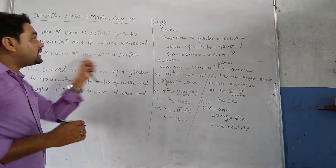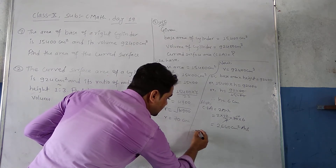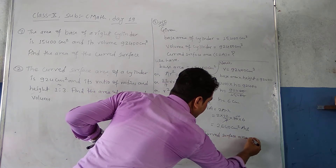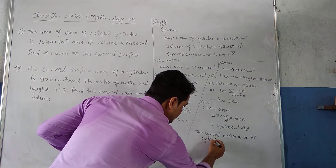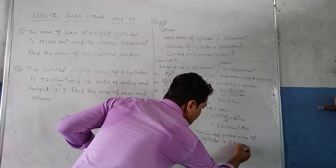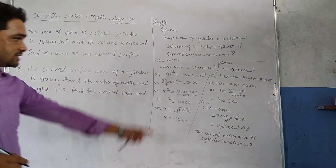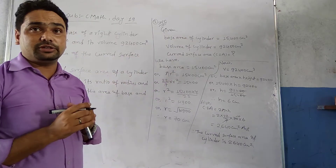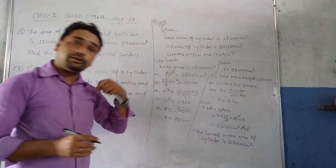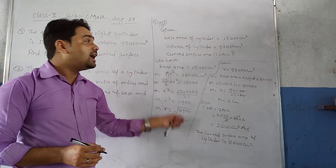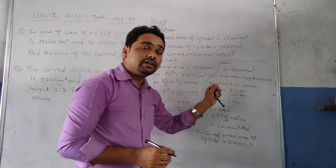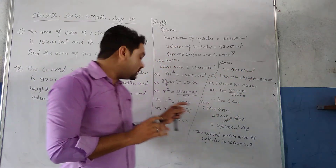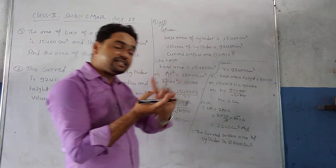Therefore the curved surface area of the cylinder is 2640 cm². This is the solution for question number one. In summary: from the base area formula we found the radius, from the volume formula we found the height, and using r and h we easily found the CSA.